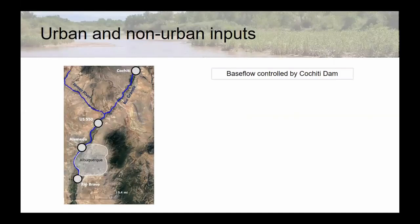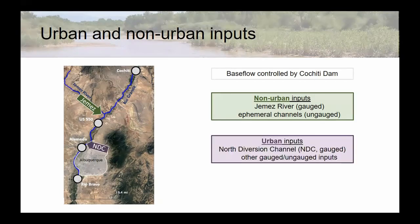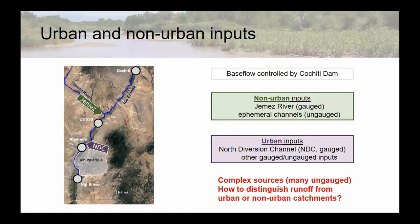For the reach, we're trying to distinguish our urban and non-urban inputs. Everyone knows this is a really complex system — a lot of gauged and un-gauged stuff. Base flow is controlled by Cochiti. We have the Jemez, which is a clear non-urban input — that's gauged — but there are a lot of ephemeral channels that are un-gauged. Same for urban: we've got the north diversion channel feeding in above Alameda, which is gauged, but there are many other gauged and un-gauged inputs. So the question is: how do we distinguish runoff from primarily urban or primarily non-urban catchments?